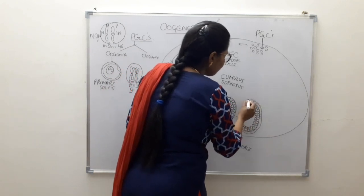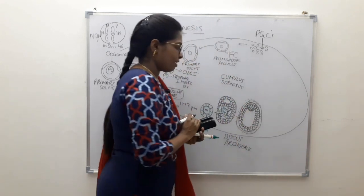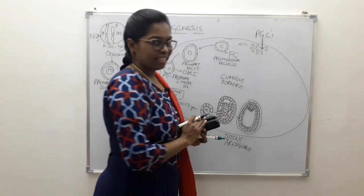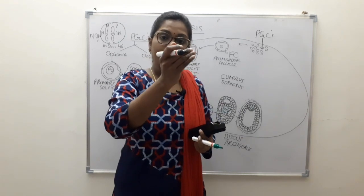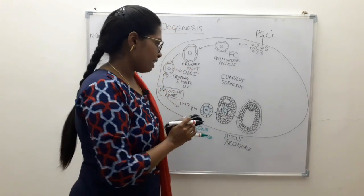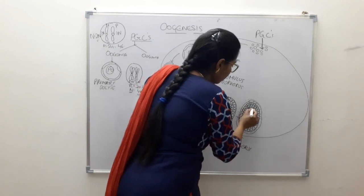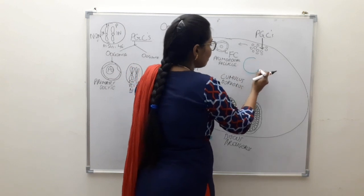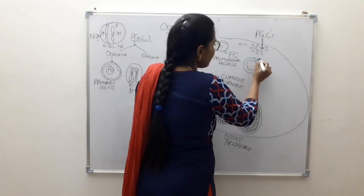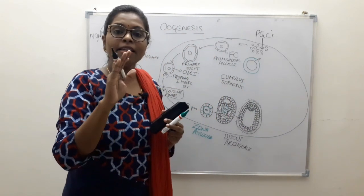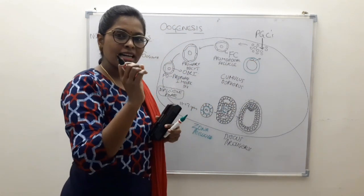The theca interna contains blood vessels and steroid-secreting cells that secrete estrogen, while the theca externa merges with the connective tissue of the ovary. Between the zona pellucida and the cell membrane of the oocyte a space exists called the perivitelline space. It is in this space that the first polar body will be accommodated.